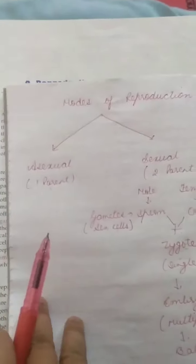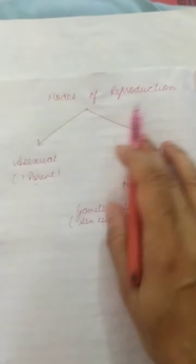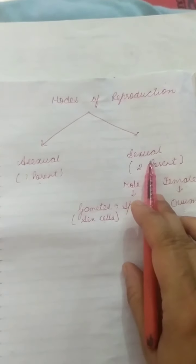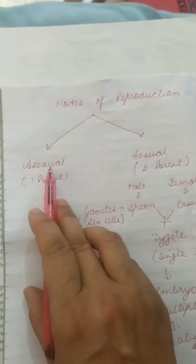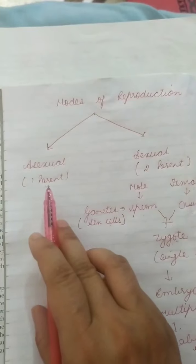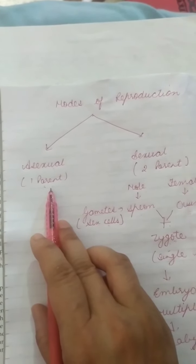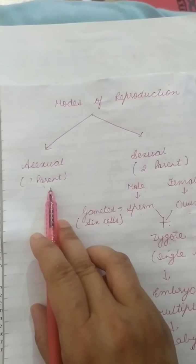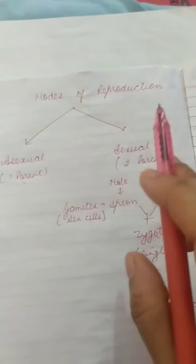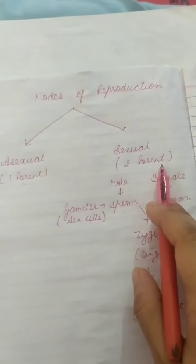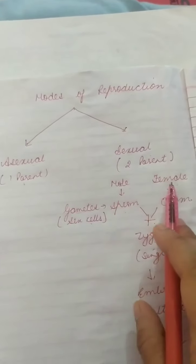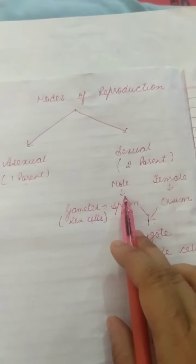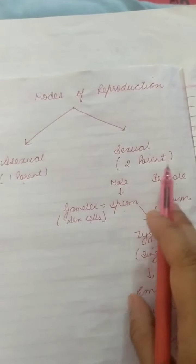So basically there are two types of reproduction. One is asexual and the second one is sexual reproduction. In asexual reproduction, only one parent is required or participates. But in sexual reproduction, we need two parents — male and female — both involved in the process of reproduction.